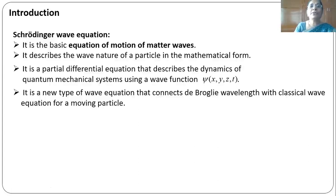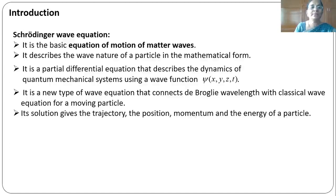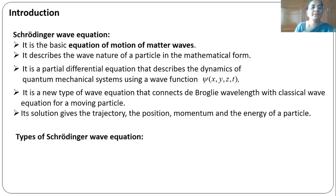Schrödinger wave equation is a new type of equation that connects de Broglie matter waves with a classical wave equation for a moving particle. Its solution gives the trajectory, the position, momentum and energy of the particle.